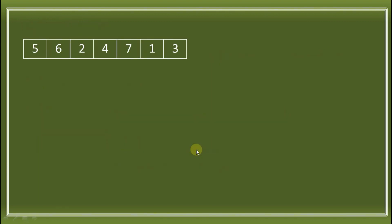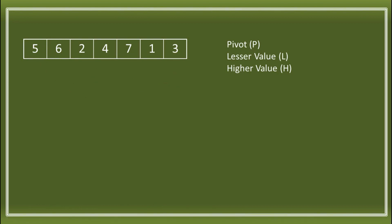So let's say we have this array. When using the QuickSort algorithm, always think of these elements: we have P as the pivot, the lesser value L, and the higher value H. There are many ways to choose the pivot — it can be the first element, the last element, the middle element, or we can add the first element plus the last element divided by 2. On this example, we're going to use 5 as the pivot.